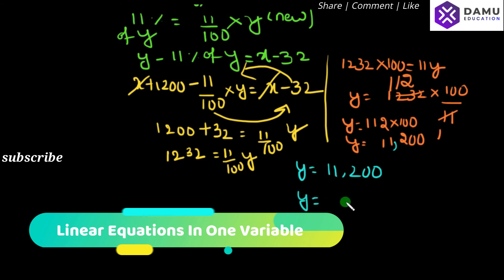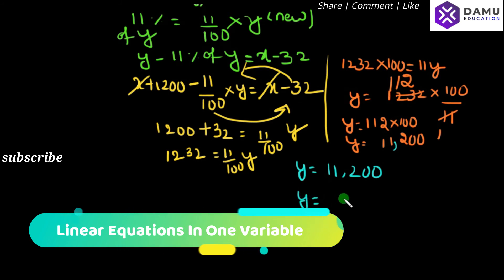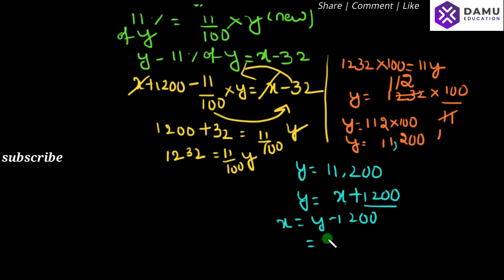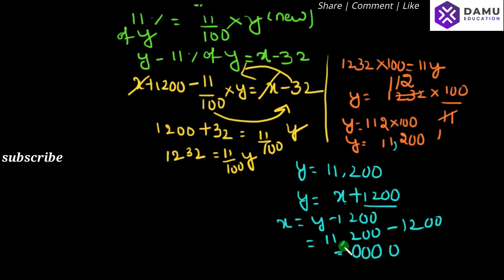This is the new population. For the original population, since X plus 1200 equals 11200, then X equals Y minus 1200, which is 11200 minus 1200. That gives us 10,000. So the original population is 10,000 people.